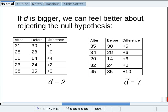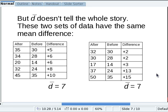But this difference is not the only story. What would happen if we had done the experiment twice and had these two sets of data?